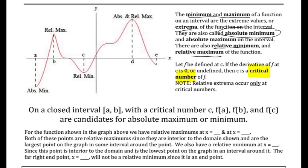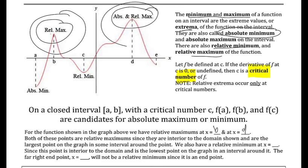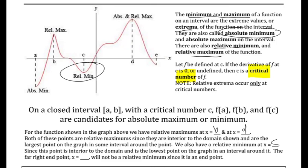For the function shown, we have relative max at x = d and x = b. Both of these points are relative maximums since they are in the interior of the domain and are the largest point on the graph in some interval around that point. We also have a relative min at x = c, since this point is inside the domain and it's the lowest point in the interval around it.